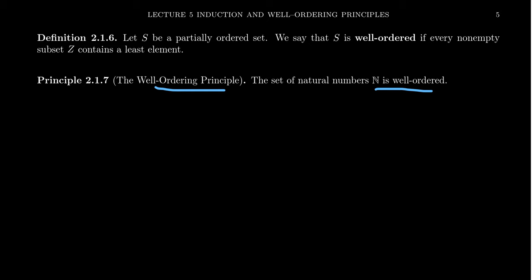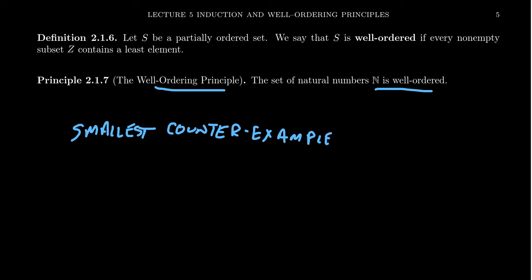So what do I mean by the smallest counterexample? This is a proof by contradiction in which, if a statement is true for all natural numbers, you assume the statement is not true for all natural numbers. By the well-ordering principle, if the statement is not true for some natural numbers, there's a smallest natural number where that statement is not true — the smallest counterexample. The well-ordering principle gives us that. Then you argue that, taking your smallest counterexample, its predecessor as a natural number is also a counterexample, thus violating that we have the smallest counterexample. So logically, the well-ordering principle is equivalent to the induction argument.